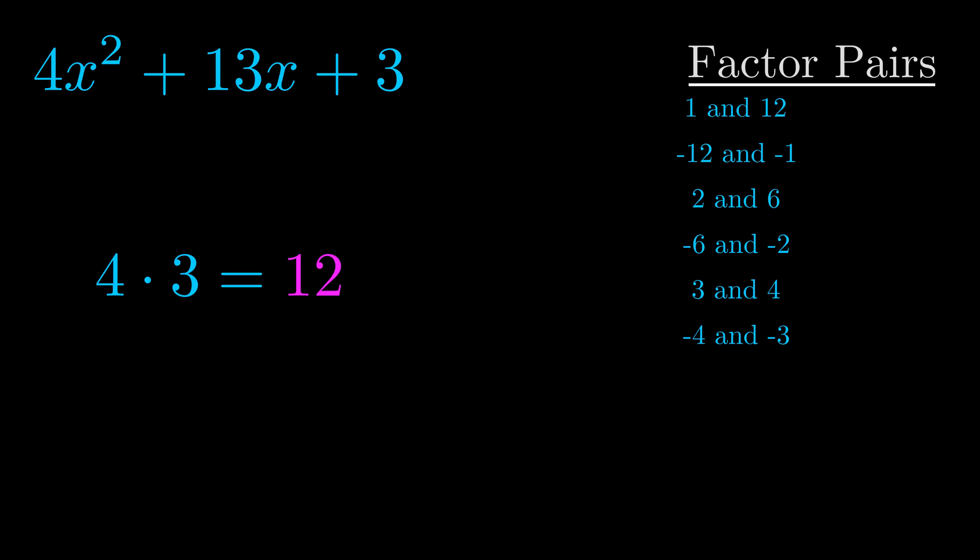The b value is the coefficient on the x term. That's the middle term, the one that we haven't done anything with yet. And really this is the only factor pair that we need.